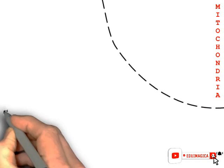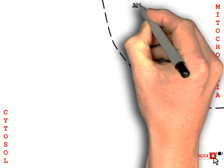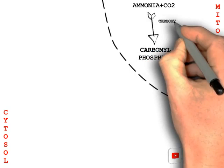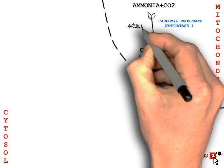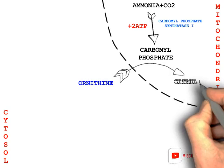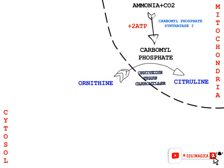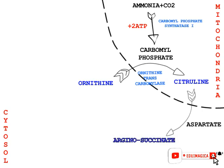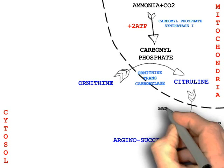Here we will show you the different reactions involved. In the mitochondria, ammonia combines with CO₂ and gets converted into carbamoyl phosphate. Then ornithine, which is present in the cytosol, gets combined with the carbamoyl phosphate and gets converted into citrulline, by the help of the enzyme ornithine transcarbamylase. Then the citrulline is transported back into the cytosol, where it combines with the compound aspartate and gets converted into argininosuccinate. During this process, one molecule of ATP is utilized, and it is catalyzed by the enzyme argininosuccinate synthetase.